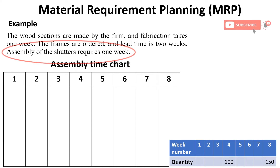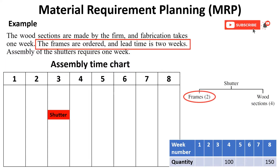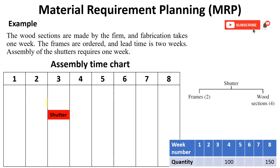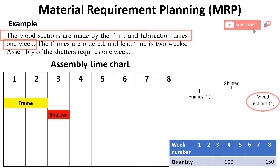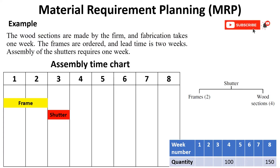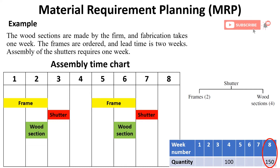The assembly of the shutter takes one week, which means that the assembly should be done in Week 3. The assembly of the shutter needs frames with a lead time of two weeks, meaning that the frames should be ordered at the beginning of Week 1, while the wood sections required for the shutter assembly need one week to be produced, so they should be finished during Week 2. Similarly, for the 150 shutters to be delivered in Week 8, their assembly has to be finished in Week 7, the order of the frames has to be released at the beginning of Week 5, and the wood section fabrication has to be done in Week 6.